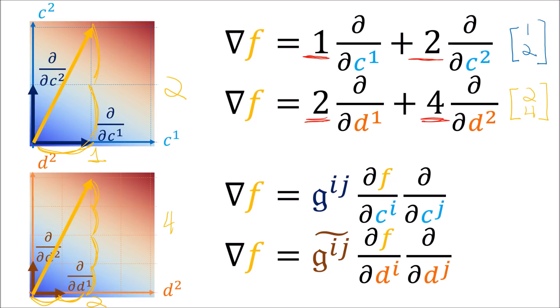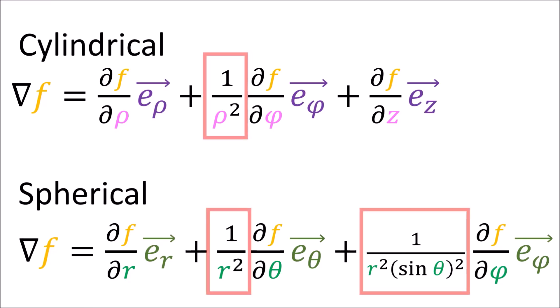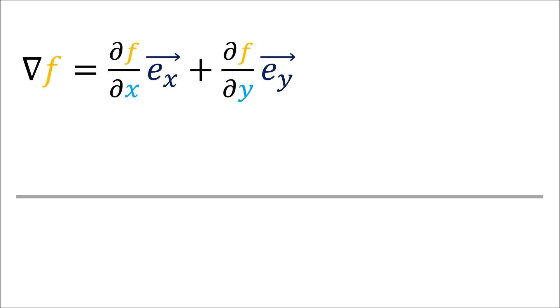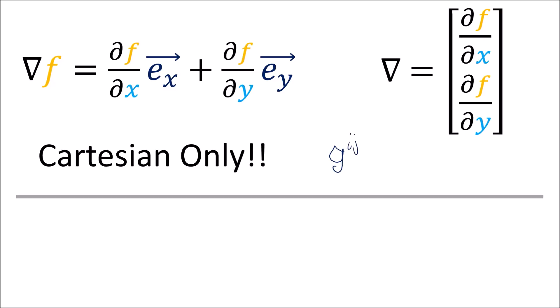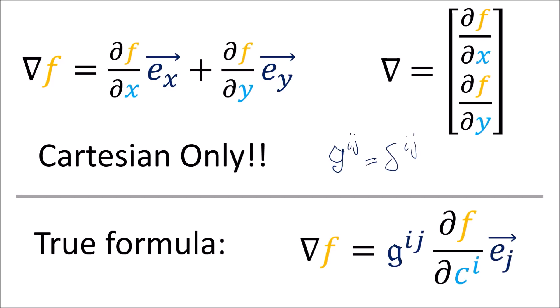To get the correct components of del f in a given coordinate system we really do need both the partial derivatives of f and the inverse metric tensor components for that coordinate system. If we forget the inverse metric tensor components we'll get the wrong answer. All the extra factors in the formulas for del f in cylindrical and spherical coordinates are just components of the inverse metric tensor. So if a textbook tells you the del operator is just a list of partial derivative operators, this is really only true in the Cartesian coordinate system where the inverse metric tensor components are the identity matrix. In general, in most other coordinate systems we need the inverse metric tensor components to get the correct formula for del f.